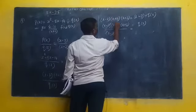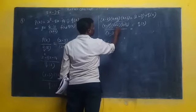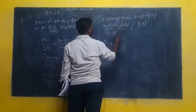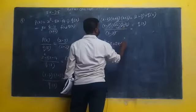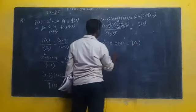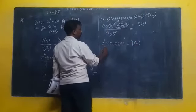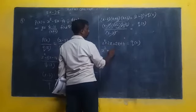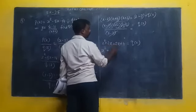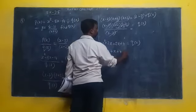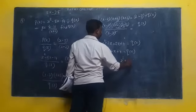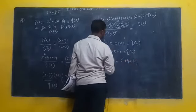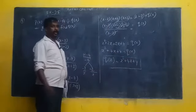X into X equals X squared. X into plus 2 equals plus 2X. Plus 2 into X equals plus 2X. Plus 2 into plus 2 equals plus 4. Equal to Q of X. This answer: X squared plus 2X plus 2X plus 4, so 4X. X squared plus 4X plus 4 equals Q of X. Q of X equals X squared plus 4X plus 4. That is the answer.